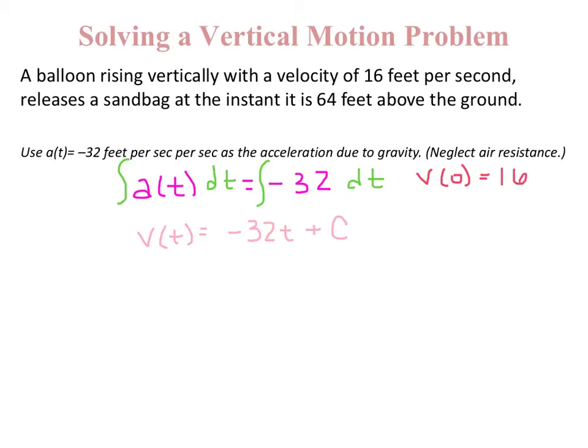So when you plug in 0, you will get 16 for C, so our velocity function is going to be negative 32t plus 16.